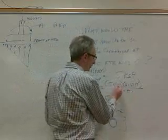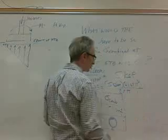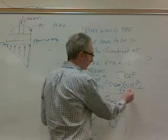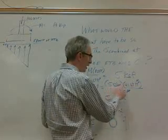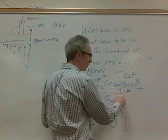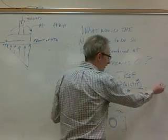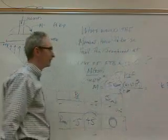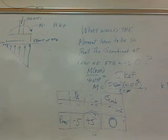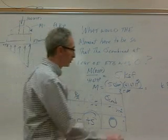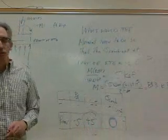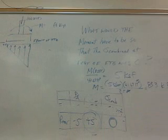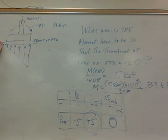Working through the units: 5 times 41.67 divided by 2.5 gives us so many kip-feet. That comes out to be 83.3 kip-feet. So a moment of 83.3 kip-feet is going to give you a combined stress of zero at the rear.